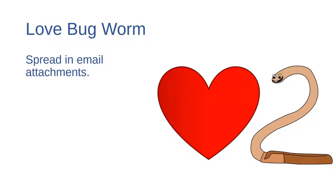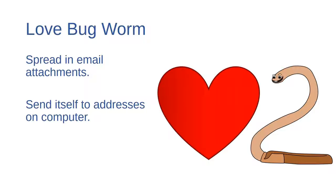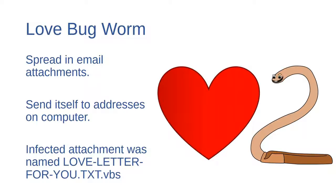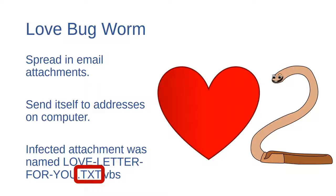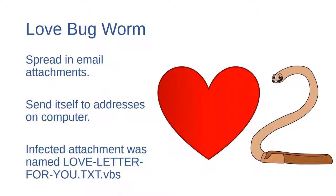One example of a malicious attachment is the infamous Love Bug worm. The Love Bug spread itself through email attachments and would send itself to all addresses stored on a user's computer. It would arrive in a victim's inbox as an attachment with the file name 'love letter for you.txt.vbs'. The file type was really .vbs, but the title tried to make the reader think it was a .txt file. Many recipients were curious and opened the file assuming it was a harmless note. Back in the year 2000, the Love Bug infected more than 500 million computers in just one week.